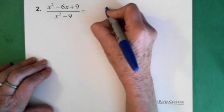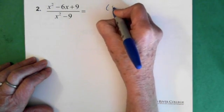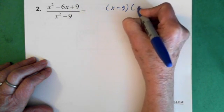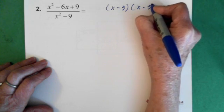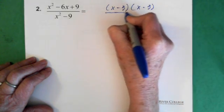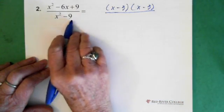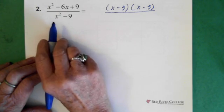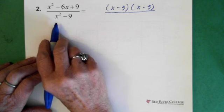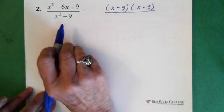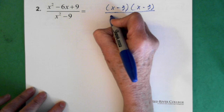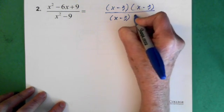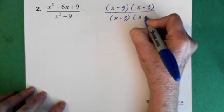And when we factor it, we end up with x minus 3 times x minus 3. On the bottom, we're looking at the difference of squares. And if you're not sure how to factor the difference of squares, just go back to the video on that. When we factor this, we end up with x minus 3 times x plus 3.